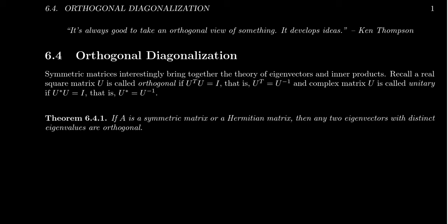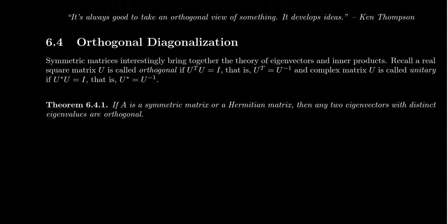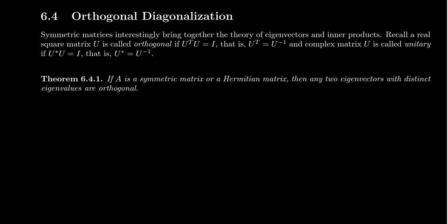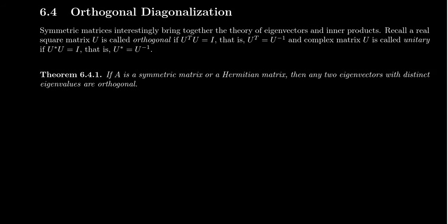This first theorem, Theorem 6.4.1, is going to start to show us why symmetric matrices and Hermitian matrices are so significant in terms of the eigen theory we've been developing in chapter 6. If A is a symmetric matrix or a Hermitian matrix, then any two eigenvectors with distinct eigenvalues are going to be orthogonal.